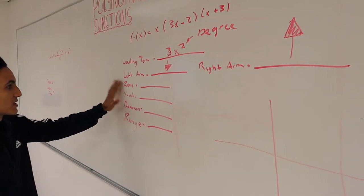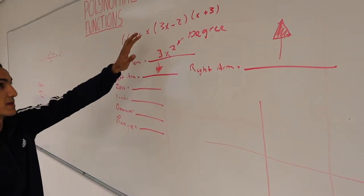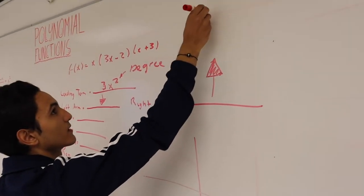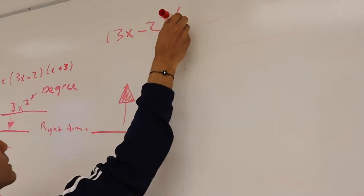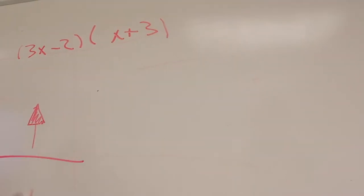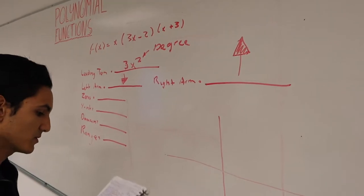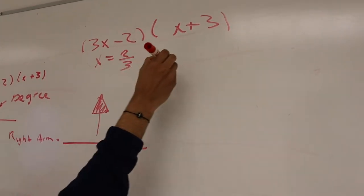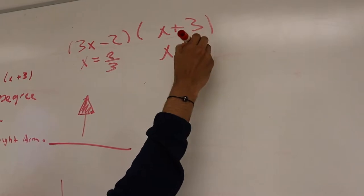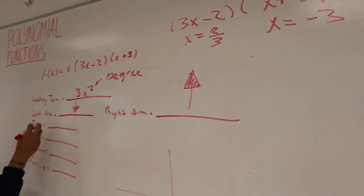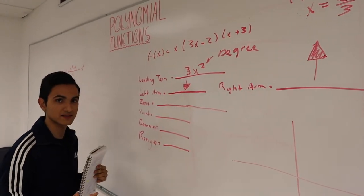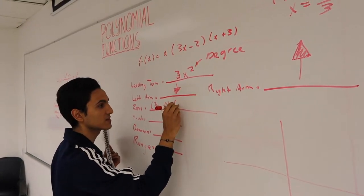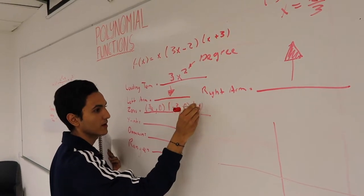Now we will find the zeros. The good thing about this problem is that it is already factored. We simplify each factor: setting each equal to zero gives us the x-intercepts. The zeros, or x-intercepts, will be at x equals two-thirds — remember to write it as a coordinate — and at x equals negative three, written as (negative 3, 0), and at x equals zero, written as (0, 0).